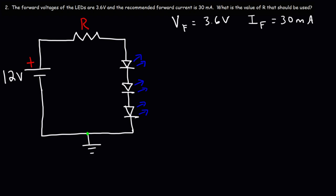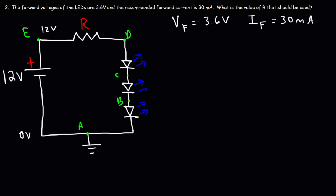Let's label the points: A, B, C, D, and E. The potential at point A is 0 since that's the ground. E is going to be at 12 volts based on the battery voltage. B is going to be at 3.6 volts, because going from A to B we cross one LED. C is 3.6 volts higher than B, so 3.6 plus 3.6 is 7.2. And the potential at D is 7.2 plus 3.6, which is 10.8 volts.